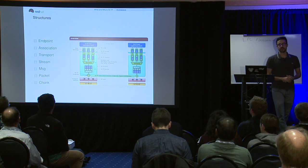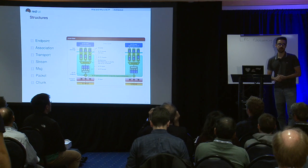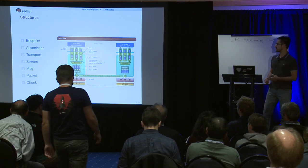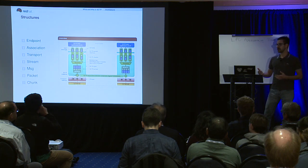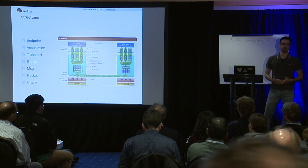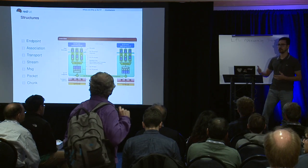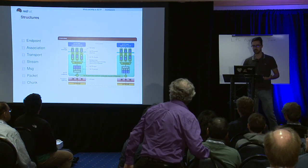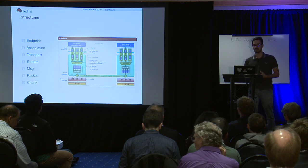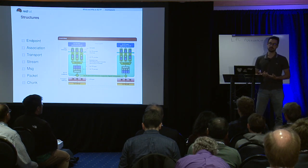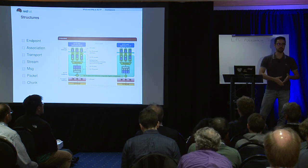A quick recap on what SCTP is — it may not be a protocol that everybody is familiar with. It was conceived to transfer the old SS7 signaling protocol over IP networks. So it's a protocol designed to transfer signals and not bulk payload, like TCP originally was. When it was conceived, it had requirements that were too much for TCP and for UDP, and they decided to create a new protocol, SCTP.